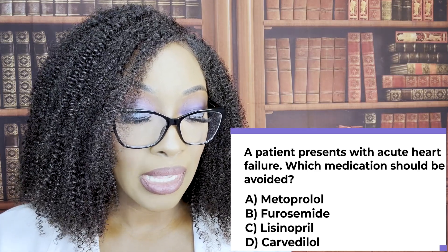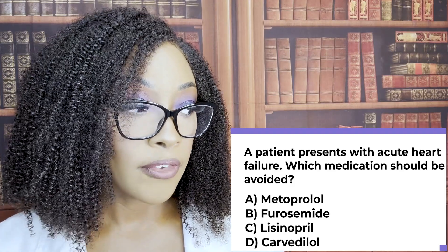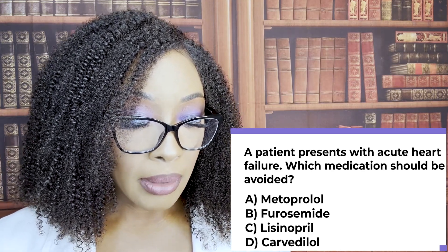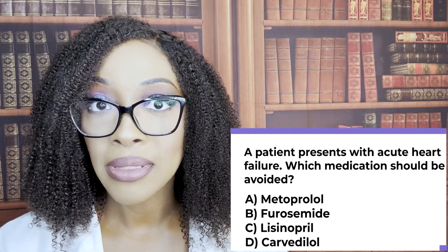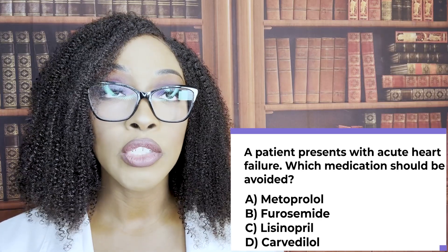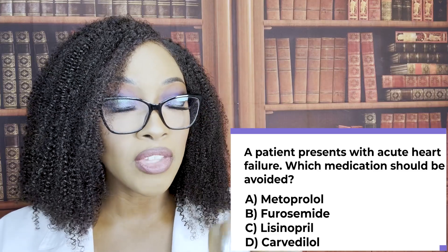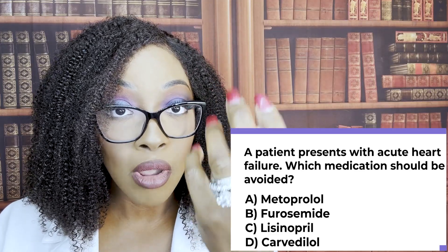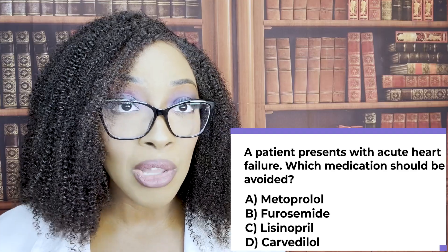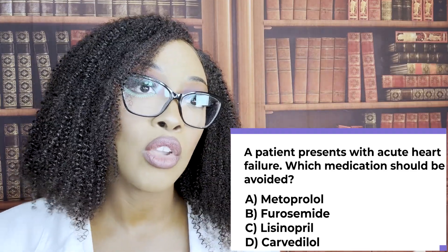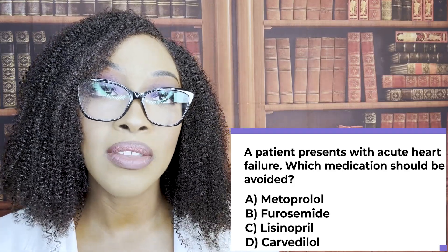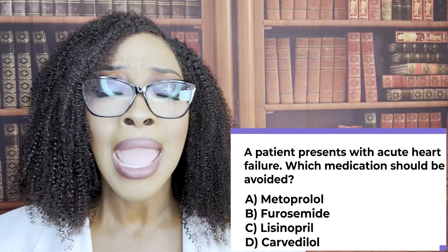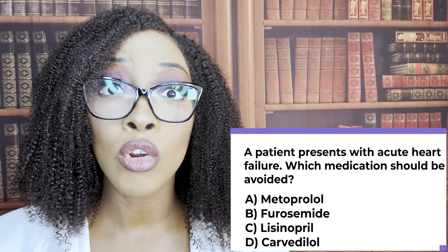The correct answer is A, metoprolol. The patient has heart failure, so metoprolol is contraindicated. This beta blocker decreases the contractility of the heart. Think about it — the patient has heart failure with fluid overload. The heart can't pump all that fluid out, contractility is already down, and now you're giving metoprolol which makes contractility even worse. That's why we love digoxin — it's a cardiac glycoside that increases contractility, making the heart contract stronger to push out all that fluid.